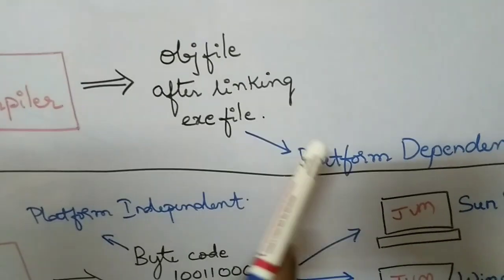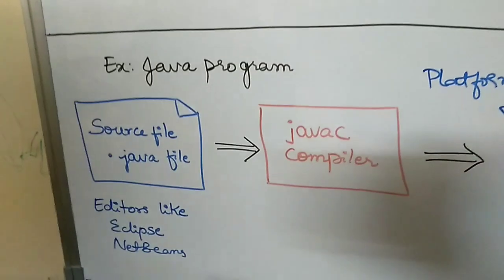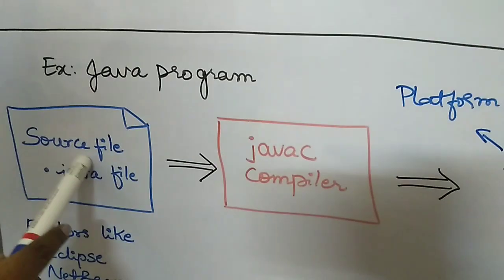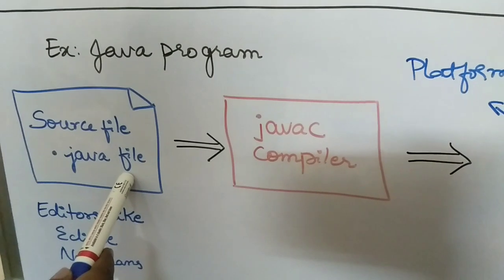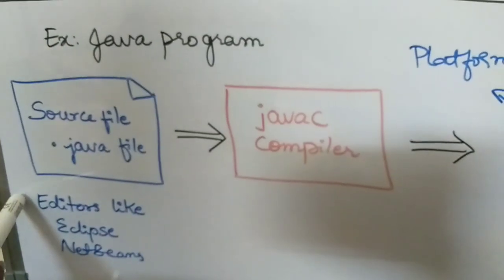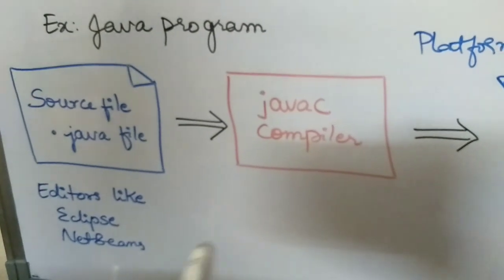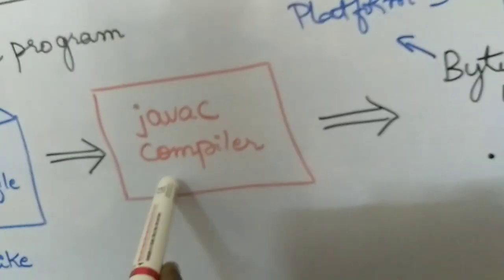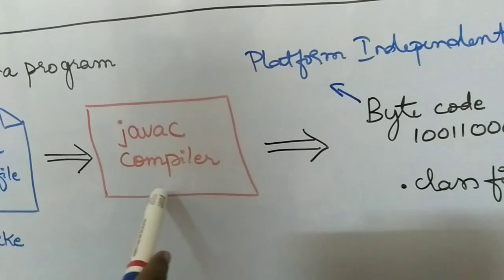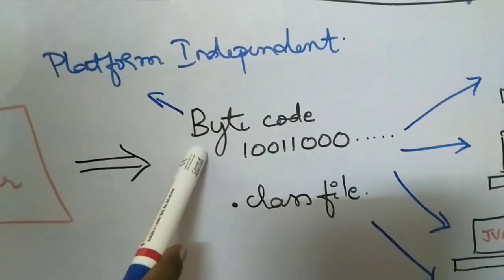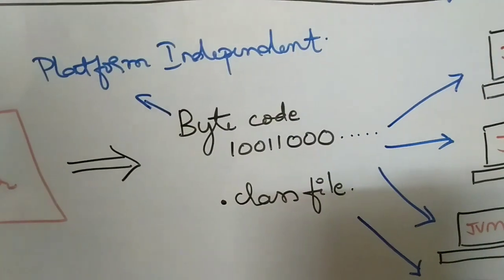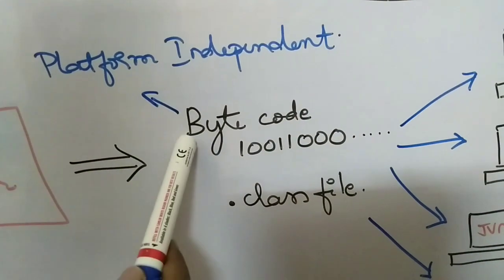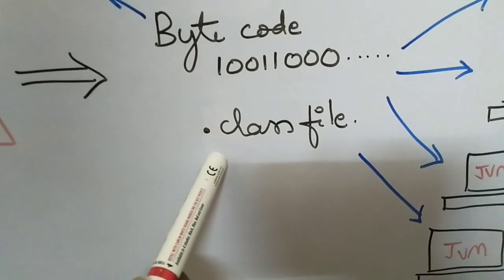Unlike C, Java is a platform independent programming language. We'll see how that is possible. The source file is the program that you write, saved with the dot-java extension. You can write the source code on IDEs like Eclipse, NetBeans, etc. After that, you compile it using the javac compiler. The javac compiler produces bytecode, which is called intermediate code, fully optimized code, or universal code. The bytecode is saved in a dot-class file.